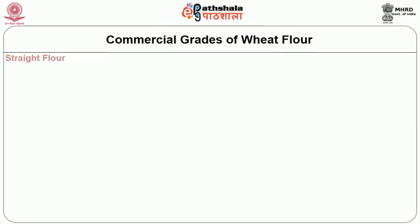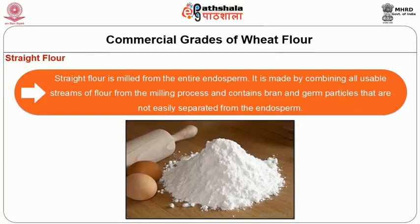Straight flour is milled from the entire endosperm. It is made by combining all usable streams of flour from the milling process and contains bran and germ particles that are not easily separated from the endosperm.